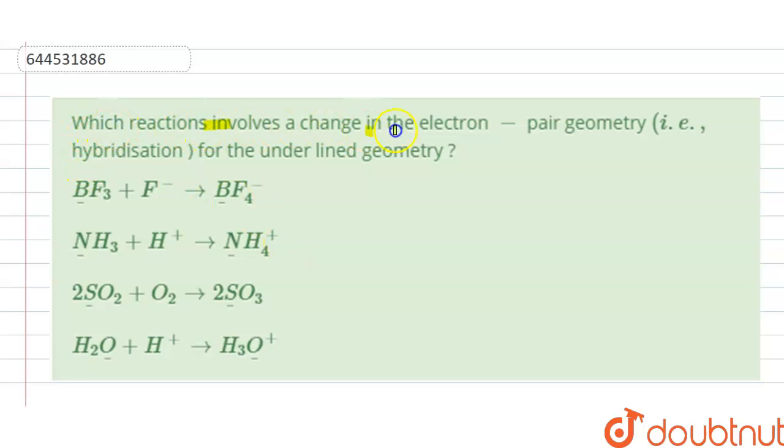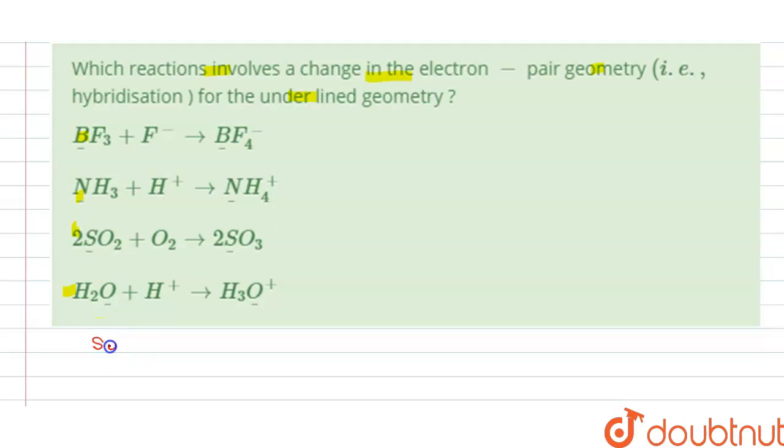Which reaction involves a change in the electron pair geometry, that is hybridization, for the underlined geometry? Options A, B, C, D are given here. So we have to find the correct option. The solution of this question is...